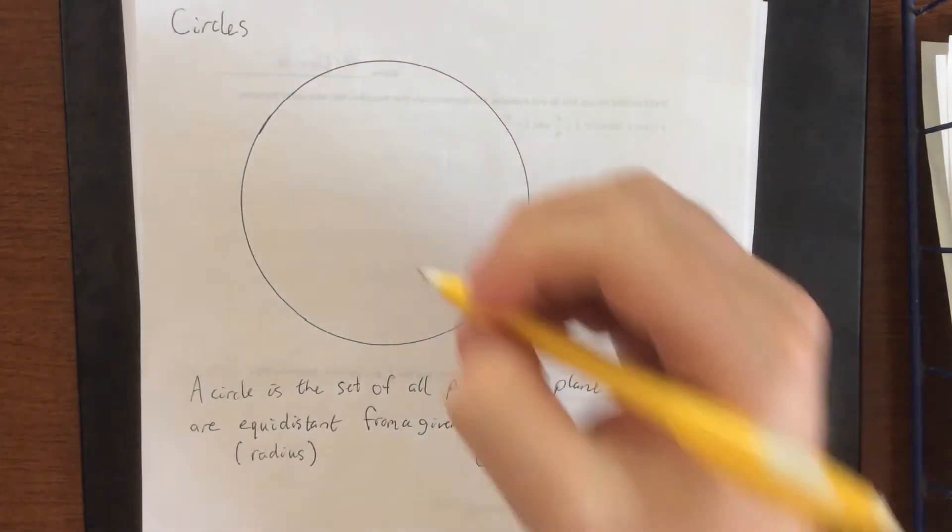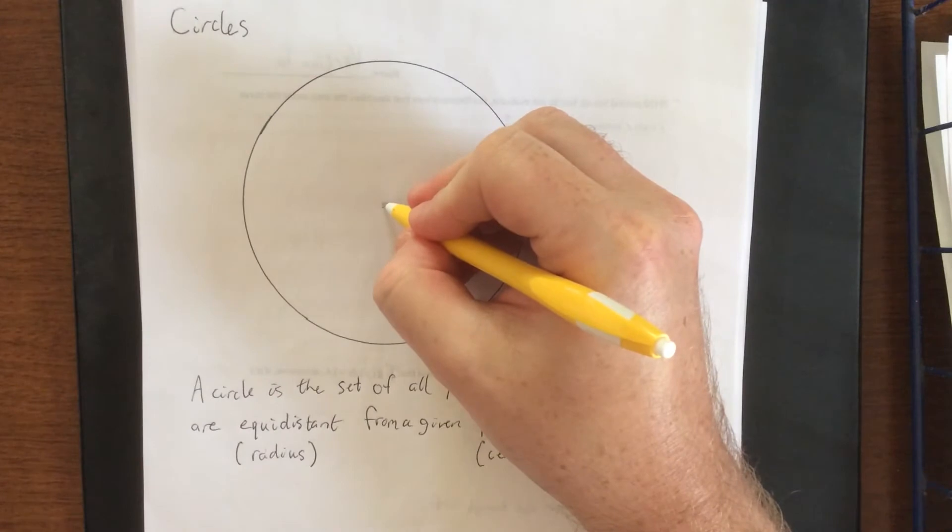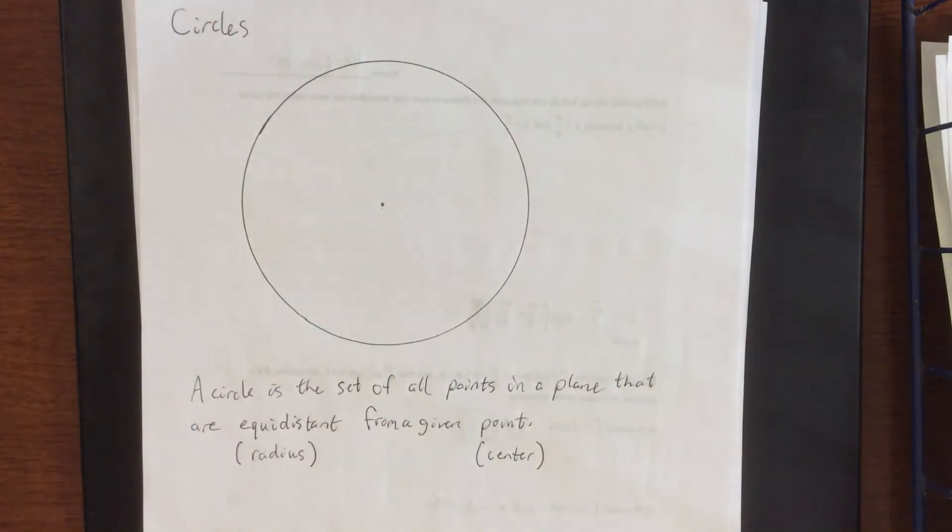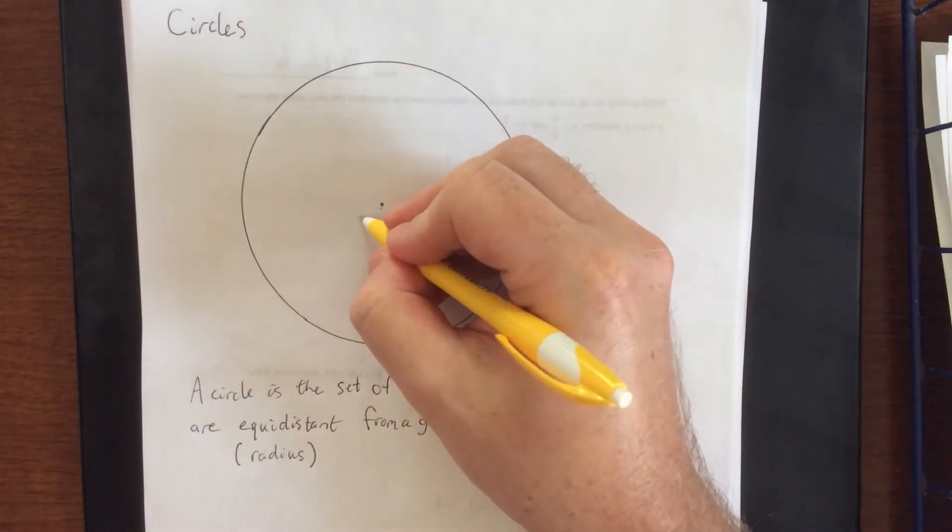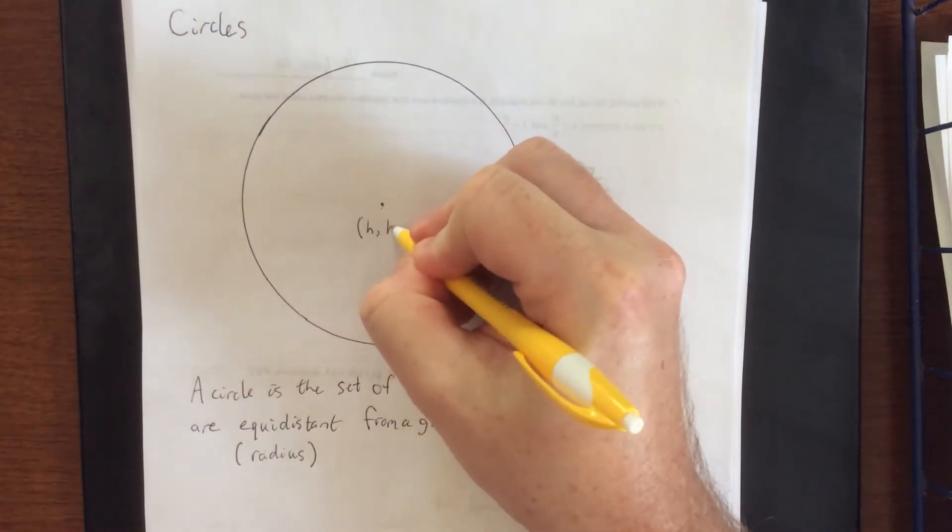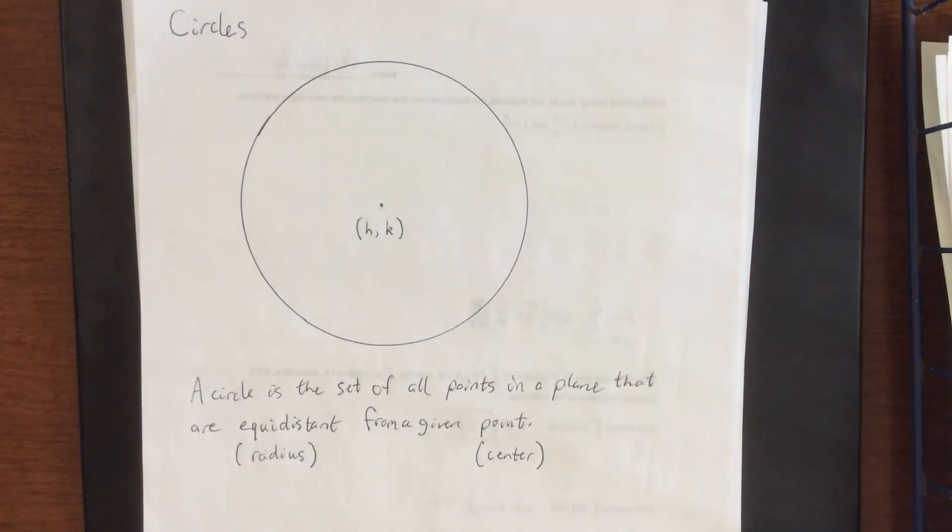The center of a circle would be the point that is right here in the middle. The center of a circle is not technically a point that is on the circle itself. However, because it is significant, we do tend to give it a special name. We'll use H and K for that ordered pair, assuming that it's in the Cartesian plane.